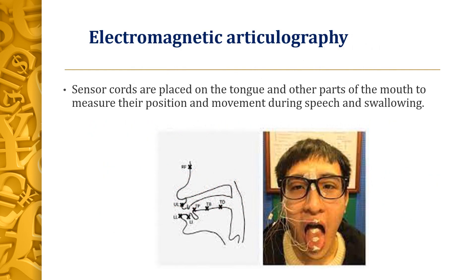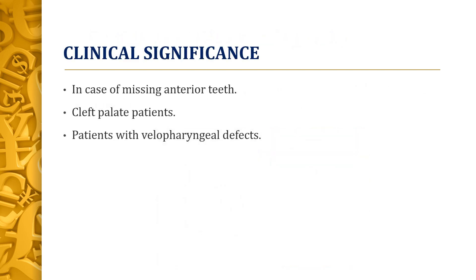Coming to electromagnetic articulography, sensor cords are placed on the tongue and other parts of the mouth to measure their position and movement during speech and swallowing. The clinical significance of palatograms includes cases of missing anterior teeth, cleft palate patients, and also patients with velopharyngeal defects.